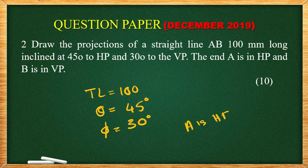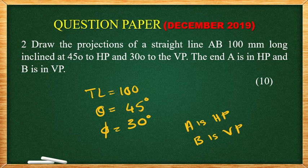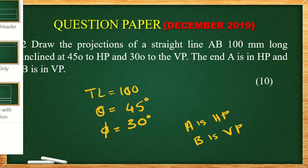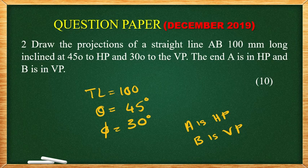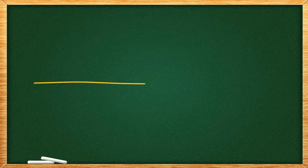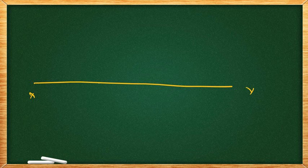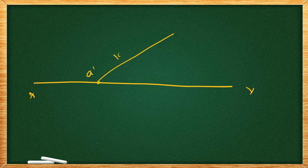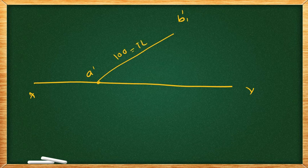The given data is that end A is in HP and B is in VP. We have to draw the projections, the elevation and plan, under the line of apparent inclination. So the line length is 100mm and inclination is 45 degrees to HP and 30 degrees to VP. Point A is in HP and point B is in VP. So we draw the reference line XY. Point A is located here, this is point A. We draw a 45-degree line, this line is 100mm long. This point is B1 dash, because the true length is on the B1 dash.